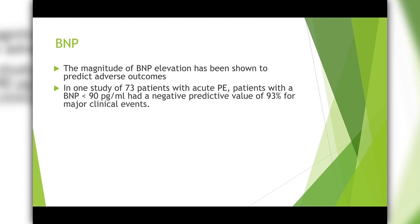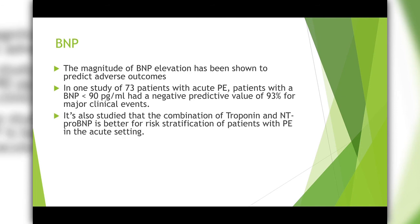In patients with a BNP of less than 90, the combination of troponin and NT-proBNP is better for risk stratification of patients with PE in the acute setting.